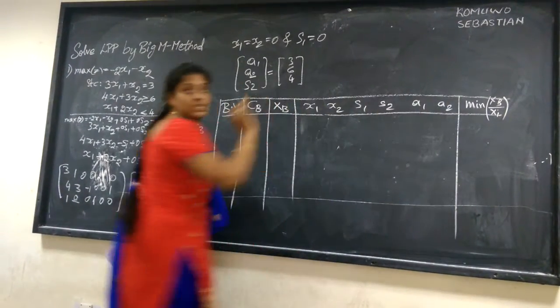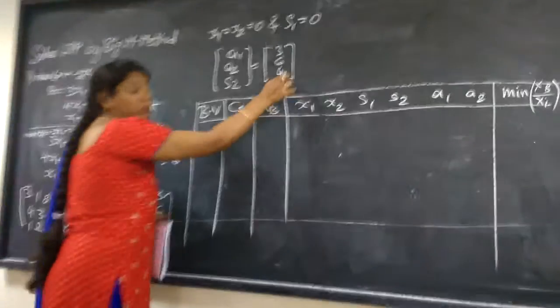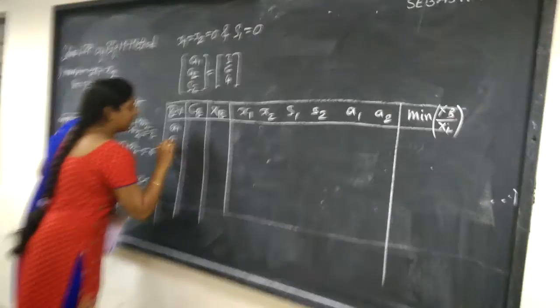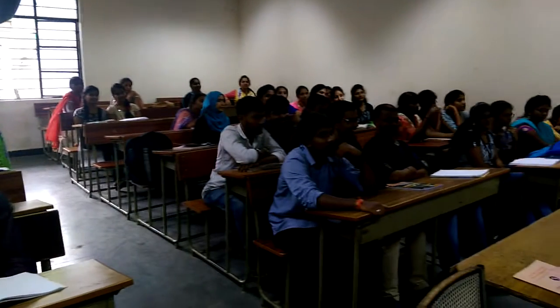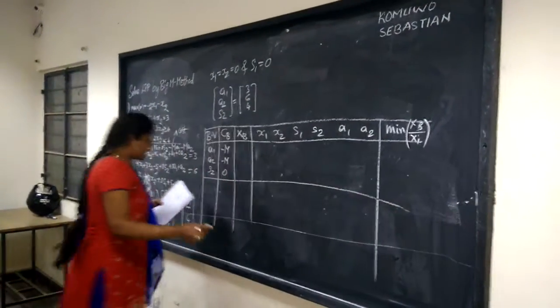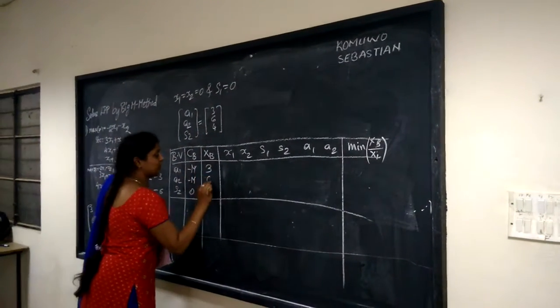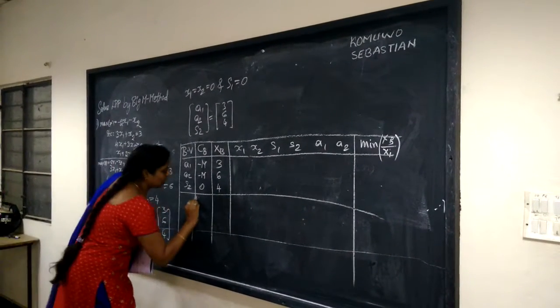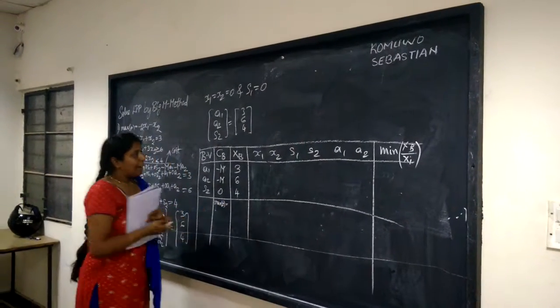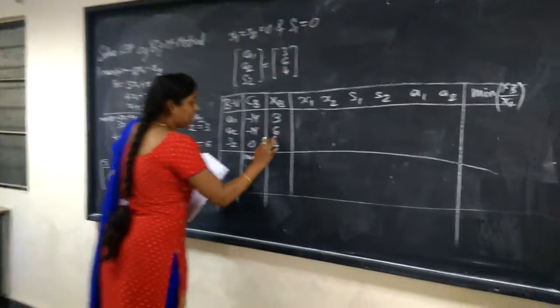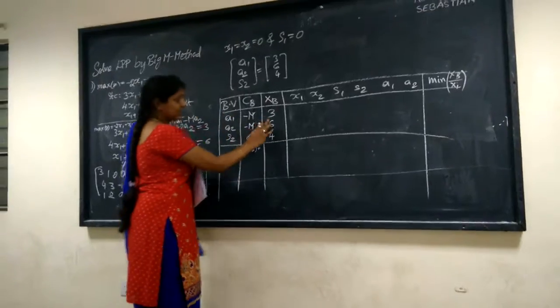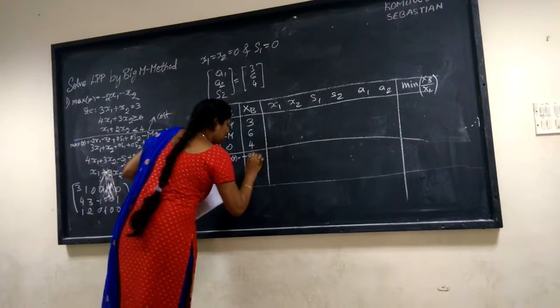Max Z is obtained as the sum of CB × xB terms: (−M)(3) + (−M)(6) + 0 = −3M − 6M = −9M. So the current max value is −9M. The aim is to keep iterating until we obtain positive delta j values. The matrix values in the table are the same as the coefficient matrix rows.